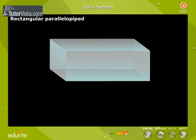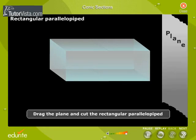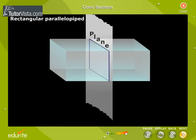Let's consider a rectangular parallelepiped. Drag the plane and cut the rectangular parallelepiped perpendicular to one of its faces. Click the button to see the sectional view. The section that is seen is a rectangle.